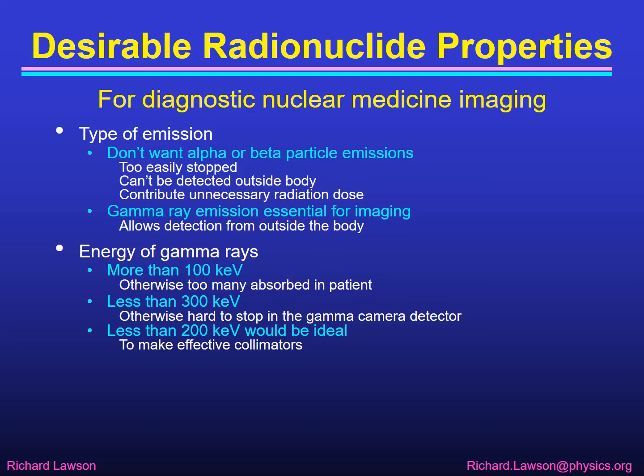The energy of the gamma rays is important as well. If the energy is too low there'll be too many absorbed in the patient, so an energy of more than about 100 keV will allow sufficient gamma rays to escape from the patient. However it needs to be less than about 300 keV, otherwise the gamma rays will be so energetic they will go straight through our gamma camera detector. In fact an ideal energy will be less than 200 keV otherwise it's too difficult to make effective collimators. So 100 to 200 keV is the ideal range, with 300 keV being really an upper limit.